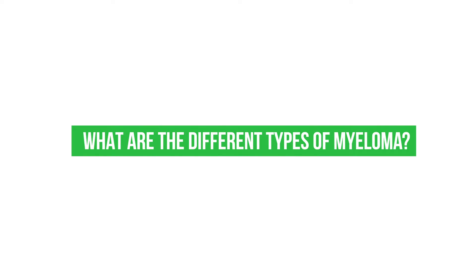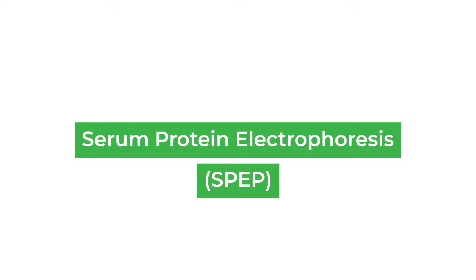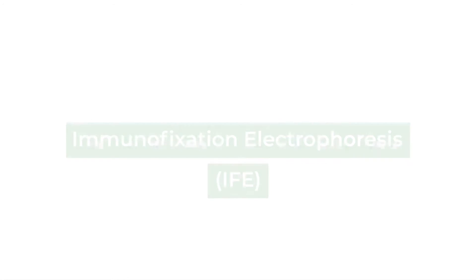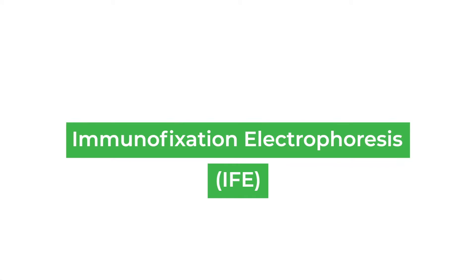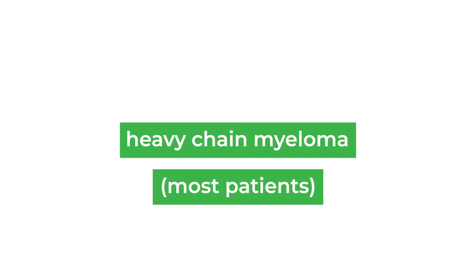What are the different types of myeloma? In at least 95 percent of patients who have myeloma, we can actually find some protein in their blood or urine that doesn't belong there. It requires some very specific tests — things called a protein electrophoresis test or an immunofixation test.